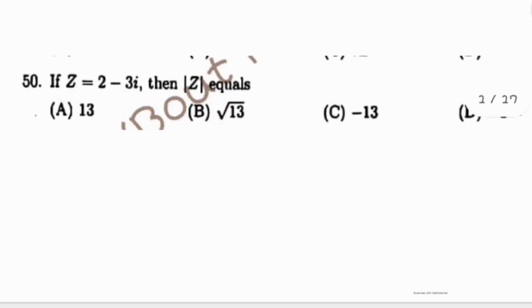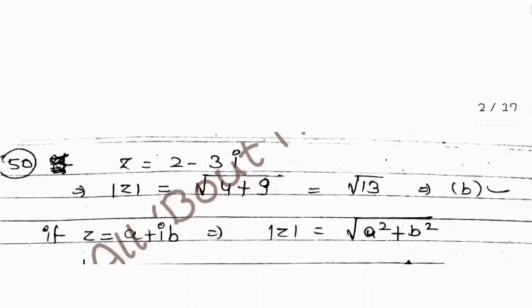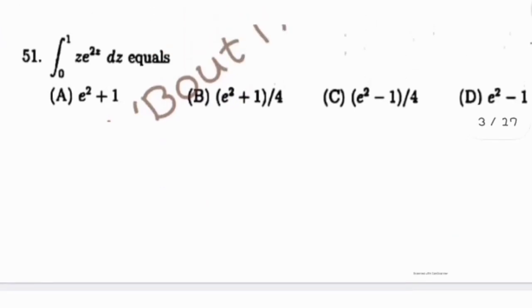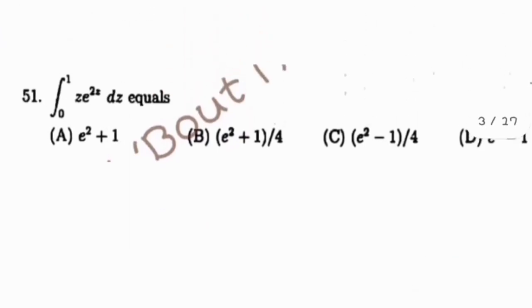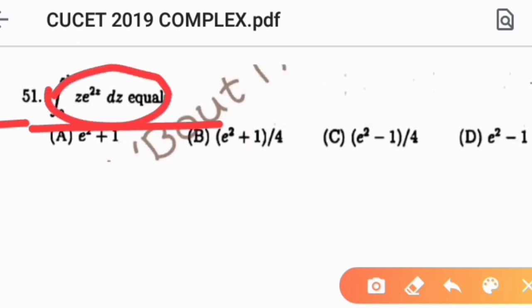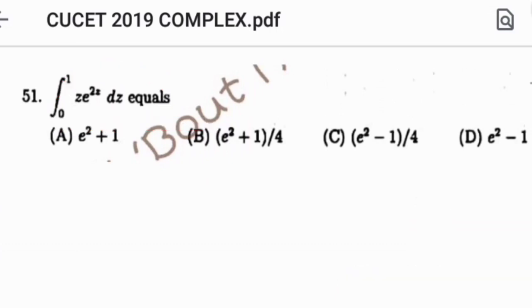Now the next question, question number 51: find the value of the integration from 0 to 1 of z·e^z dz.